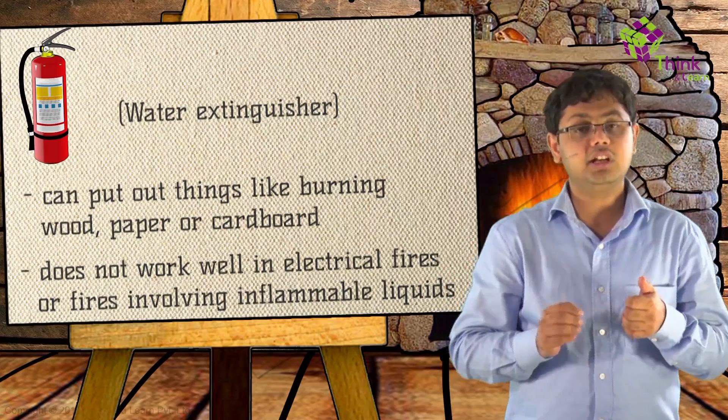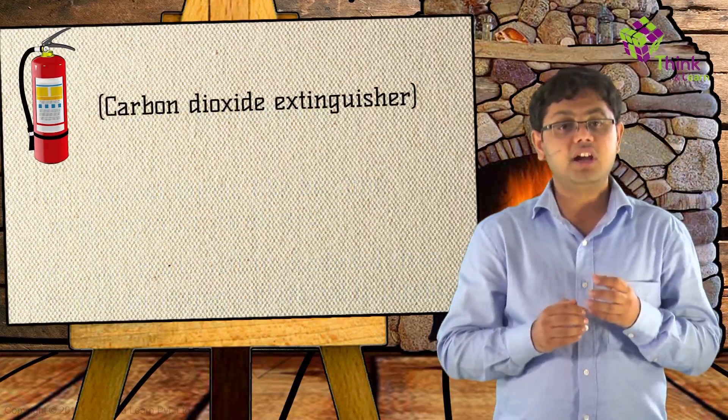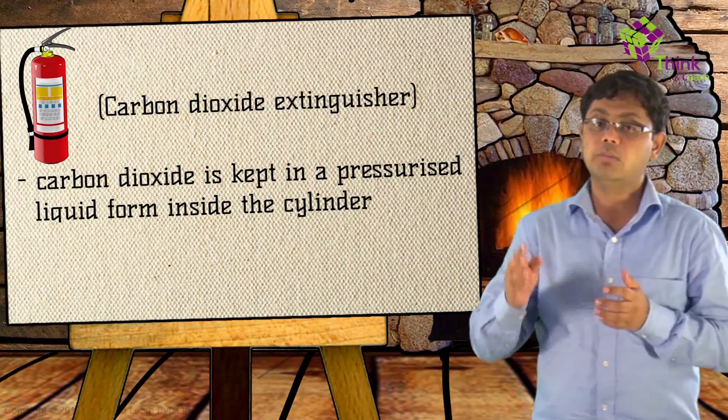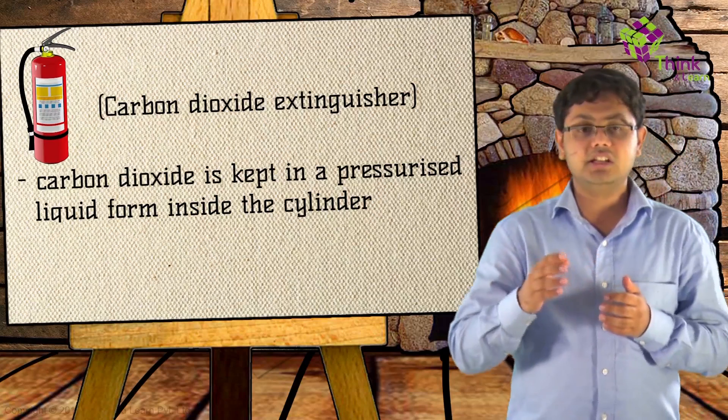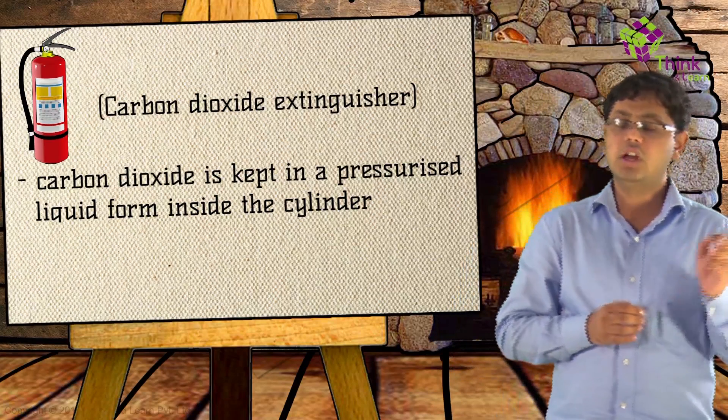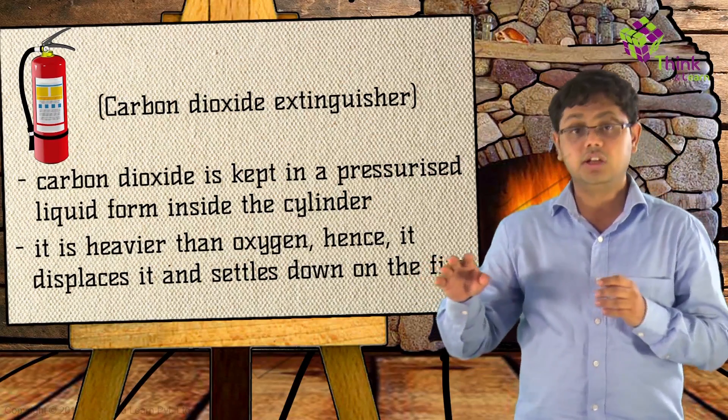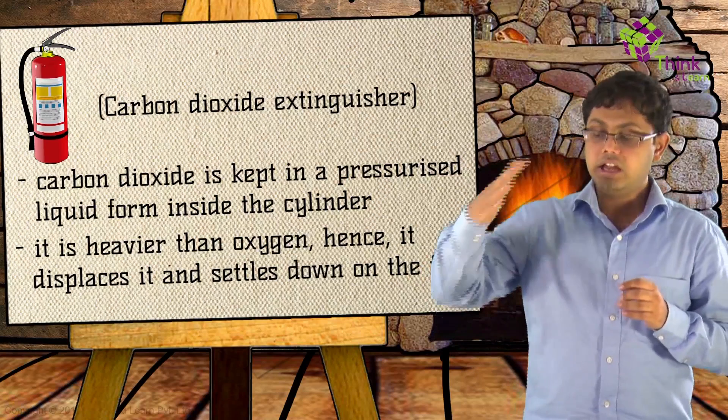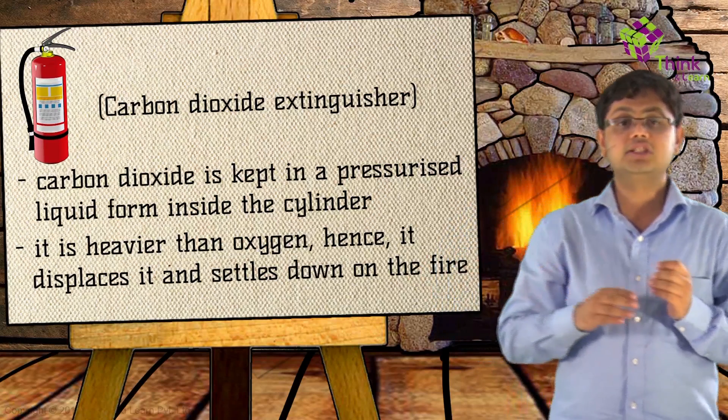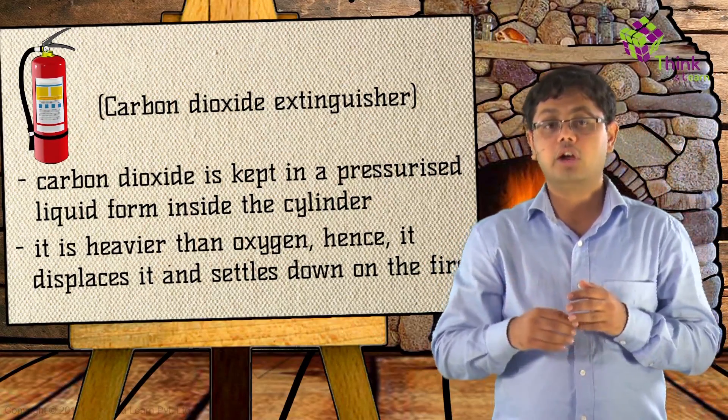One popular fire extinguishing material is pure carbon dioxide. In a carbon dioxide extinguisher, the carbon dioxide is kept in a pressurized liquid form in a cylinder. When the container is opened, the carbon dioxide expands to form a gas in the atmosphere. Carbon dioxide gas is heavier than oxygen, so it displaces the oxygen from the surroundings and it basically settles upon the fire itself. This sort of fire extinguisher is common in restaurants because it won't contaminate the cooking equipment or food.